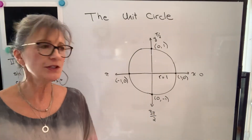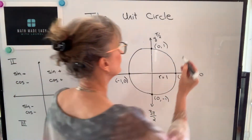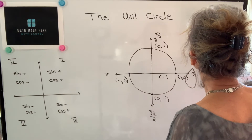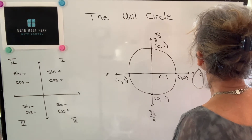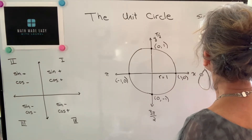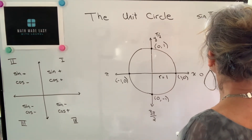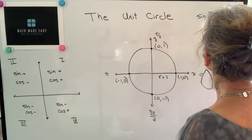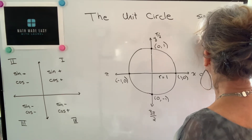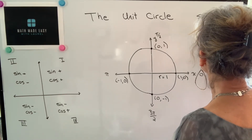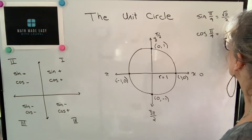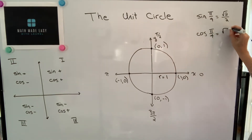In the last video we found that the sine of 45 degrees, which is pi over four radians, is root two over two. We also found that the cos of pi over four radians is root two over two.